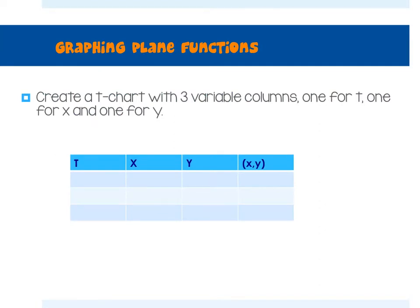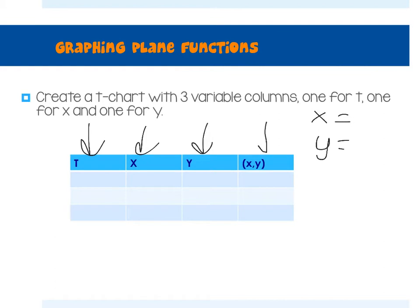Here's what you'll need to do: create a T chart. This time, add an extra column labeled T. So here's T, here's X, and here's Y. With our equations — X equals and Y equals — we'll take the value of T, plug it into the X equation to get an X value, and then plug T into the Y equation. From that, we'll get the resulting points as X-Y coordinate pairs.